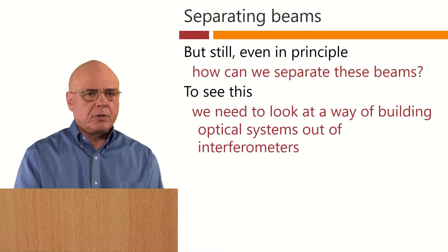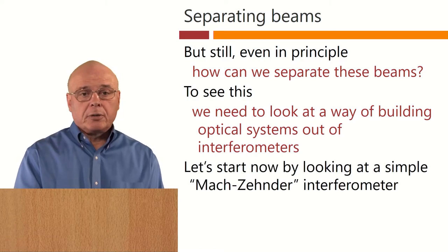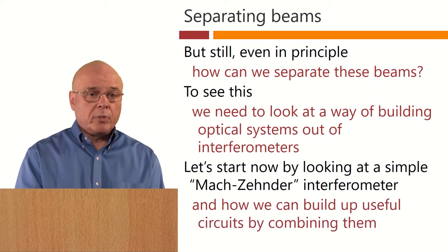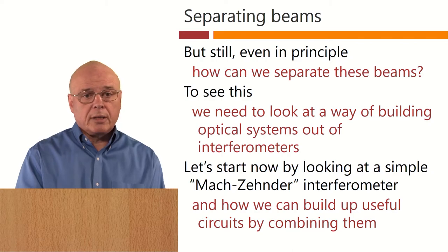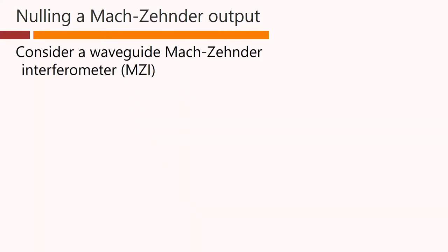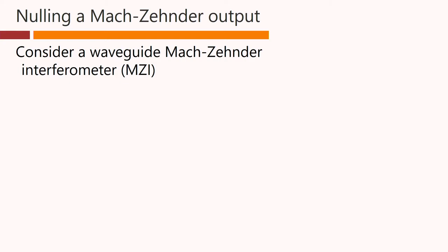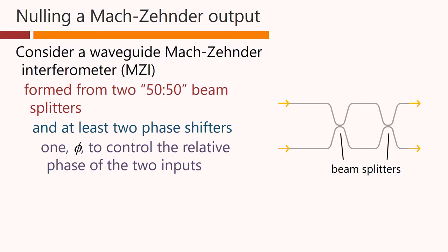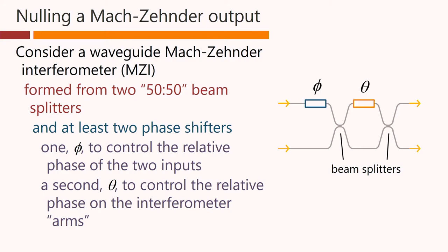To see this, we need to look at a way of building optical systems out of interferometers. Let's start by looking at a simple so-called Mach-Zehnder interferometer and see how we can build up useful circuits by combining them. Consider a waveguide Mach-Zehnder interferometer, formed from two 50-50 beam splitters — that is, equal beam splitters — and at least two phase shifters: one, phi, to control the relative phase of the two inputs, and a second, theta, to control the relative phase on the interferometer arms.